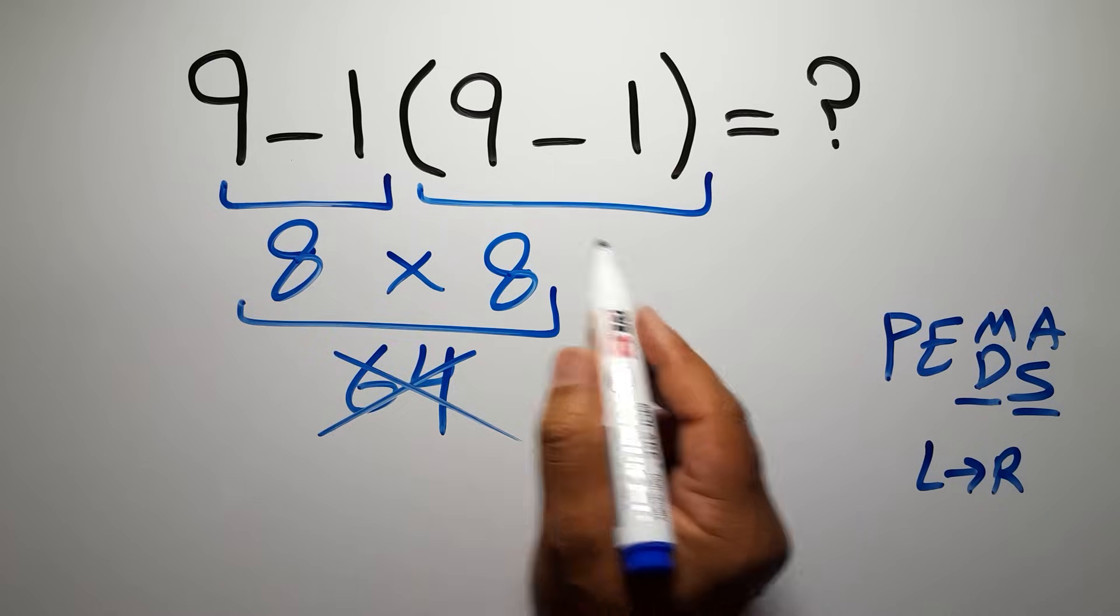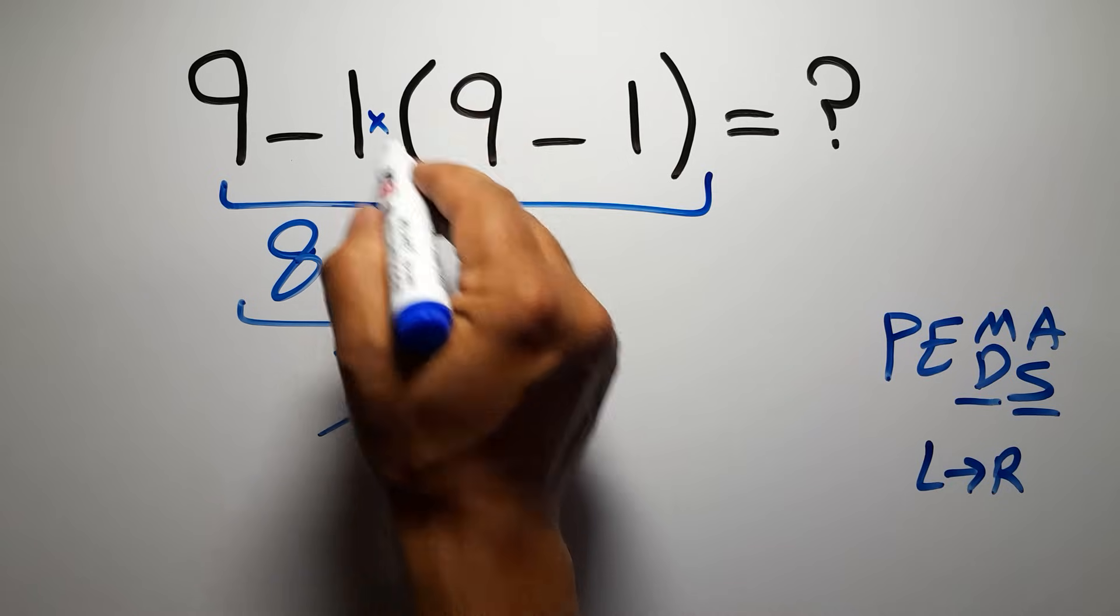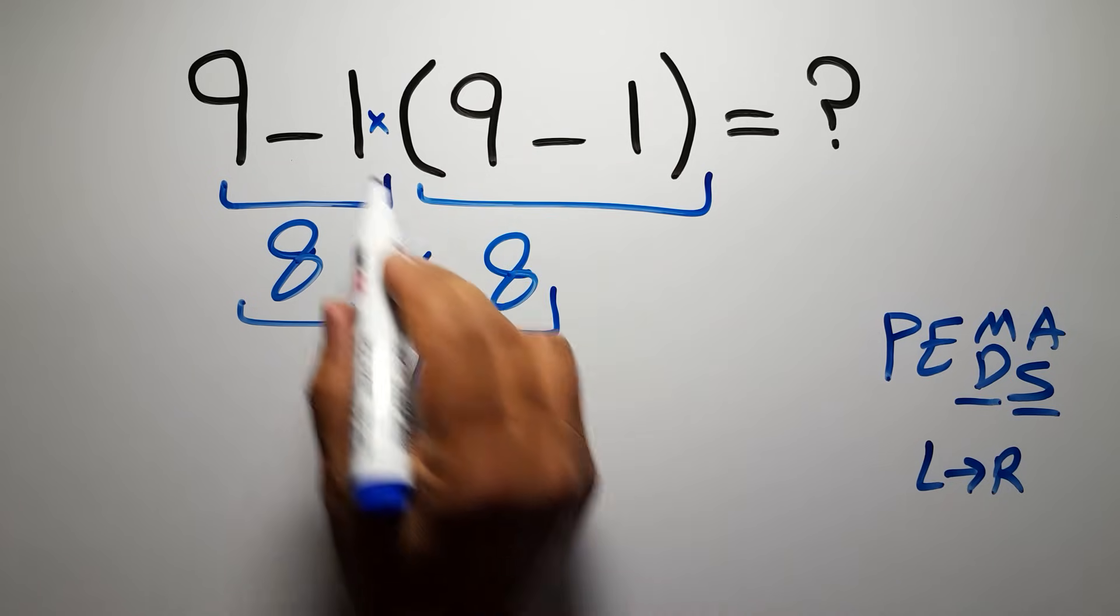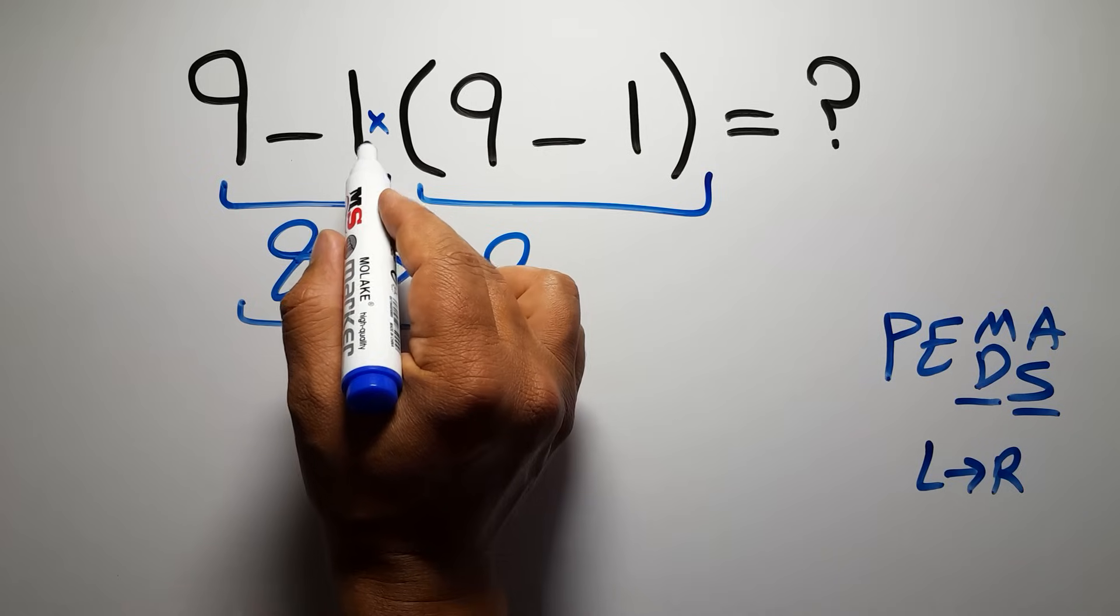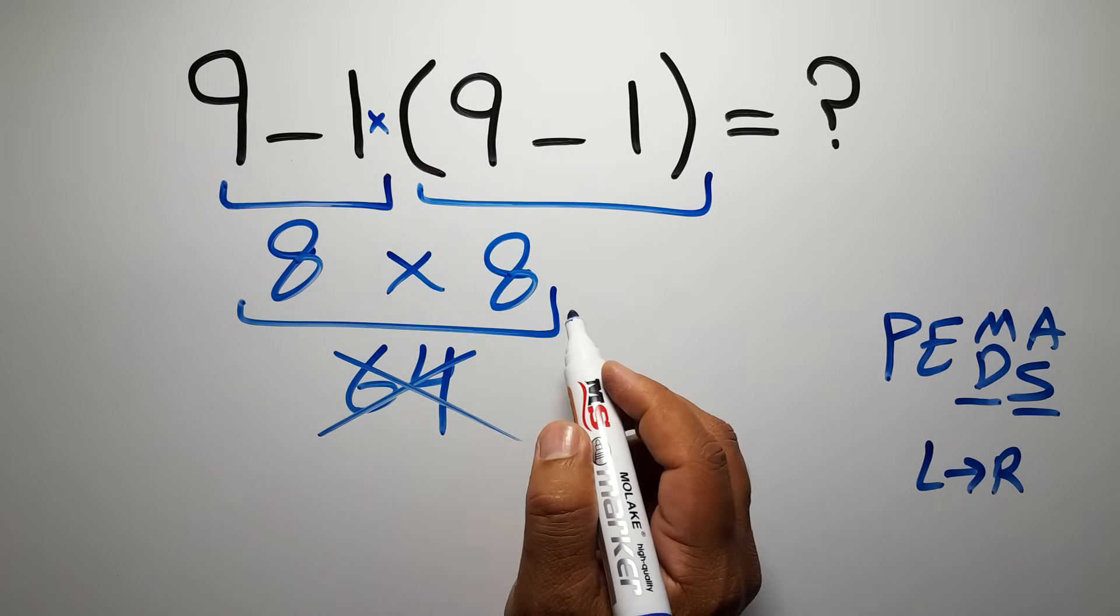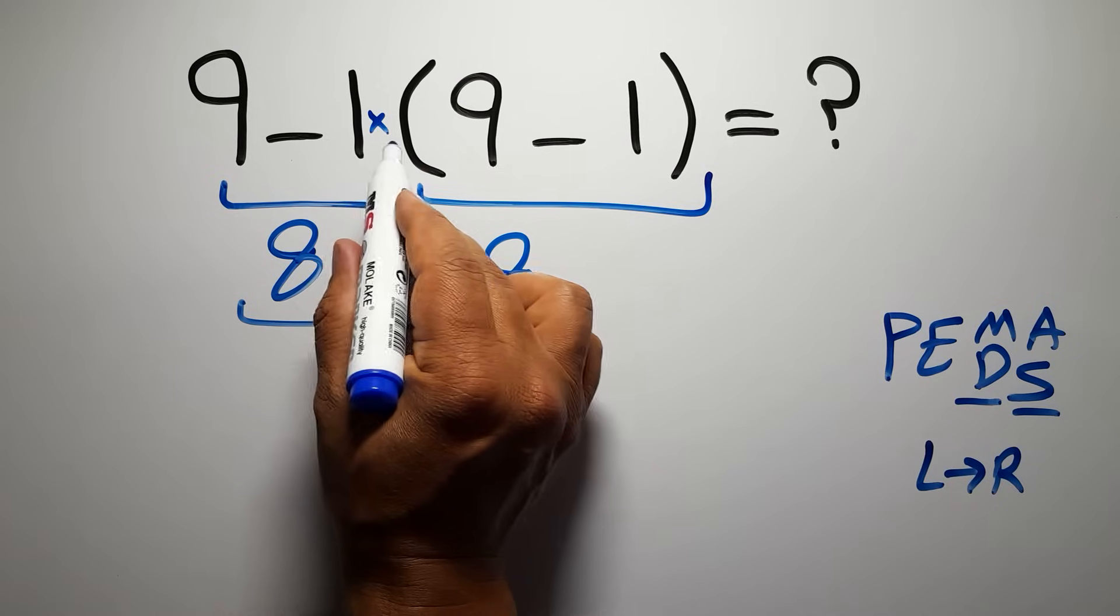In this expression we have one subtraction, one multiplication, and one parenthesis. Inside this parenthesis we have one subtraction. Here we have a multiplication, because in mathematics when a number is placed next to parentheses, it means multiplication, and we usually don't write the multiplication sign for brevity.